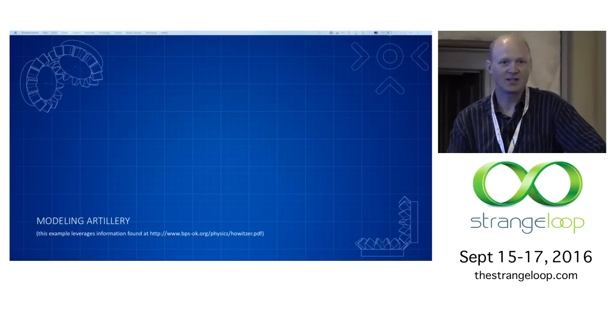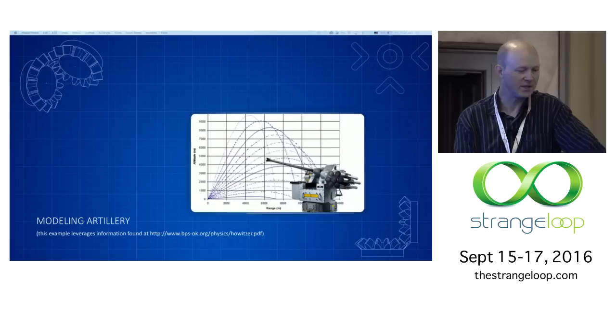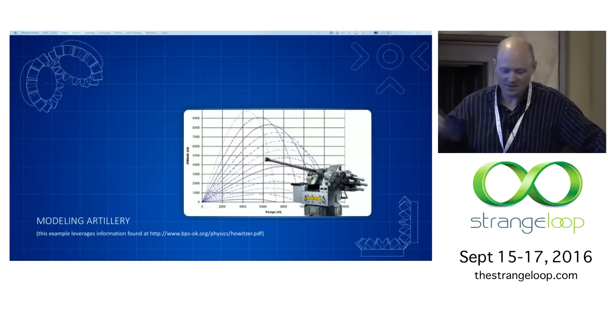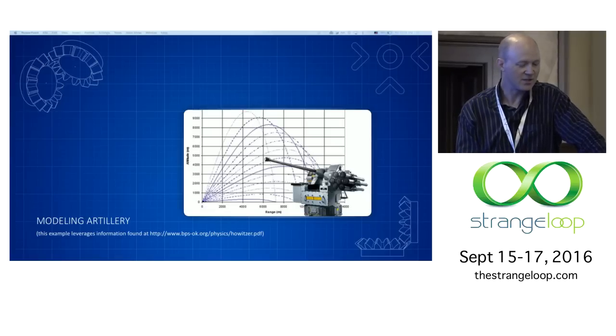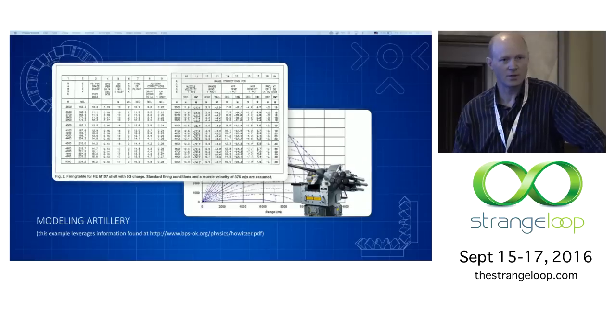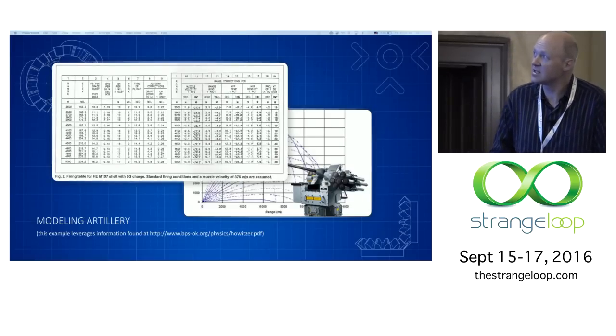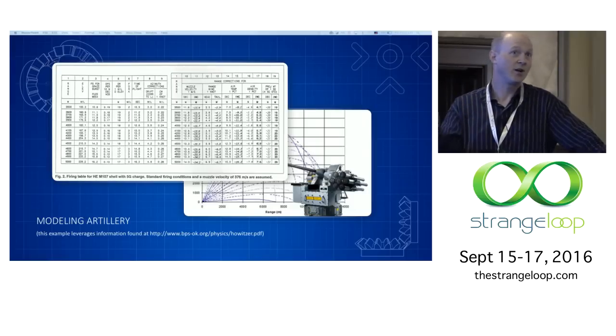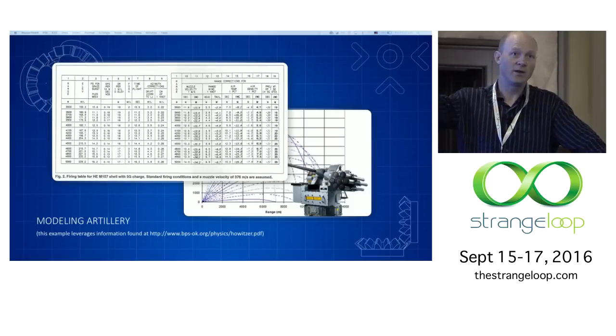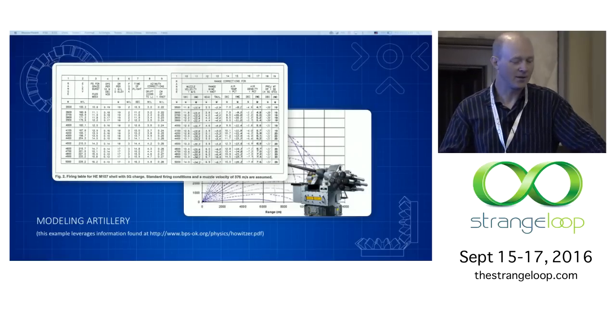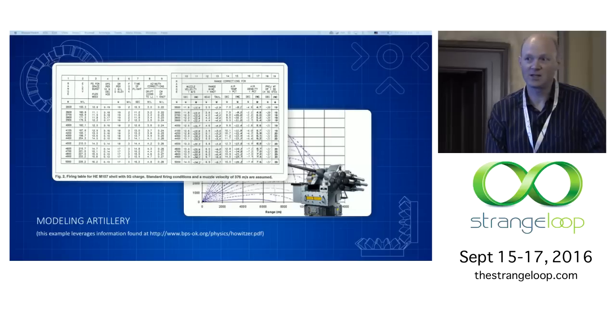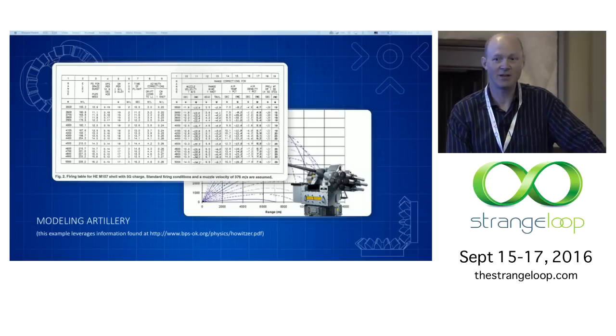I decided I would use this problem as a segue into talking about Modelica. So you can imagine firing artillery. That's what the trajectories look like. Ultimately, what the government was interested in was generating tables that tell you different firing angles, different wind directions, different air conditions, where the shells are going to land. And this was surprisingly difficult to do pre-computing because you had to have people manually doing this, and of course, that's pretty error-prone.